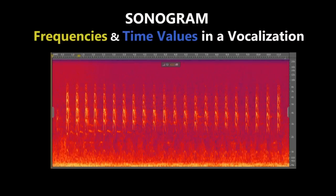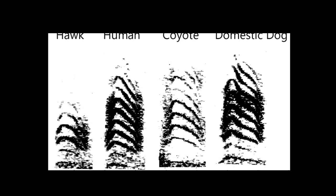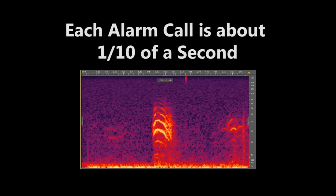Computer software generates a sonogram, which is a pictorial representation of the frequencies and time values contained in a vocalization. Prairie dog alarm calls look like a series of stacked chevrons, kind of like sergeant stripes with the peak pointing upward. Each call is about a tenth of a second, so it is very brief.